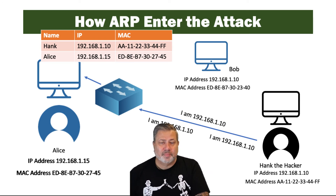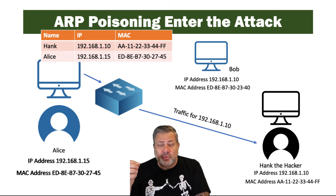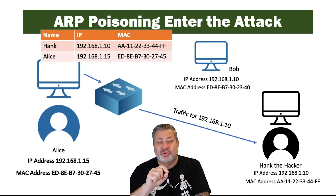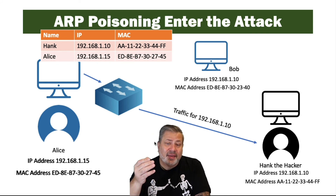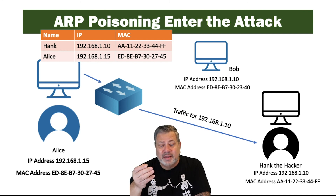Now the tables are updated and the information, instead of flowing correctly to Bob's computer, is being sent to Hank's computer — and he's probably getting information he shouldn't get. The ARP poisoning attack changes information within the address resolution protocol table of computers and switches by overriding correct information with malicious information. Since a switch restricts traffic only to the ports it should go to, this is a way for Hank the hacker to get information he shouldn't have, which is why the ARP poisoning attack is so dangerous.